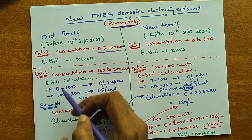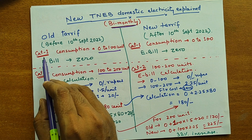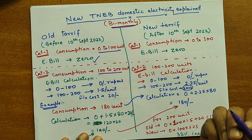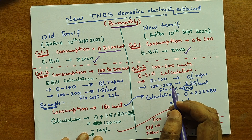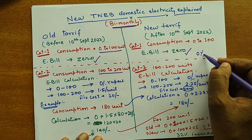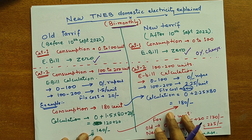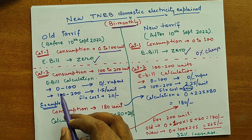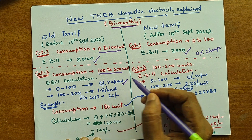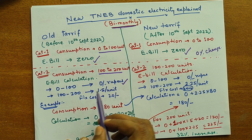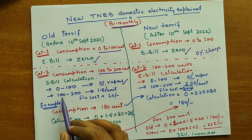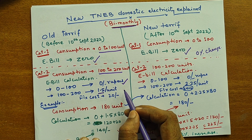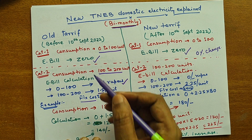Now let us compare the old and new tariff. For the first category, 0 to 100 units, there is no change — the electricity bill was 0 previously and in the new tariff it is also 0. For those consuming more than 100 but less than 200 units, the first 100 units are 0 rupees as a government subsidy. For the remaining units, you pay 1.5 rupees per unit plus a fixed cost of 20 rupees. This is the old system.